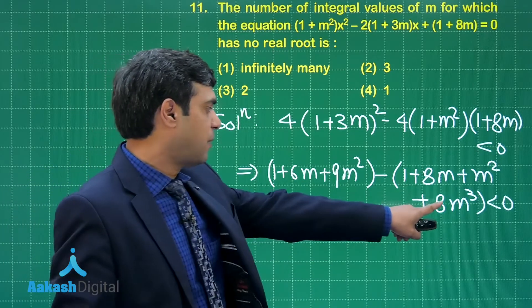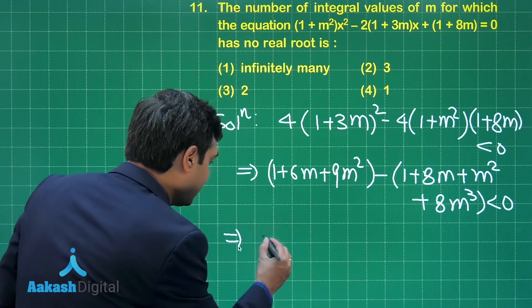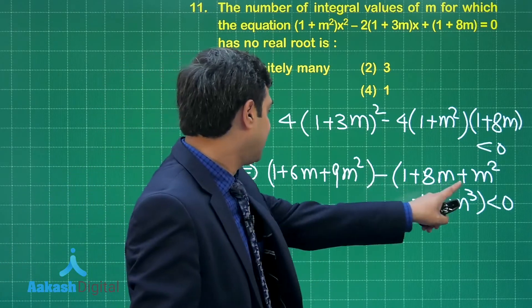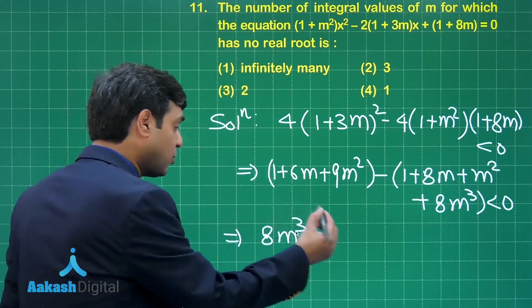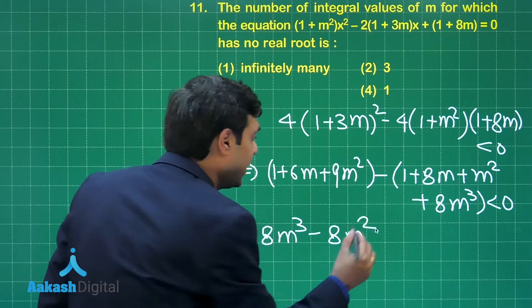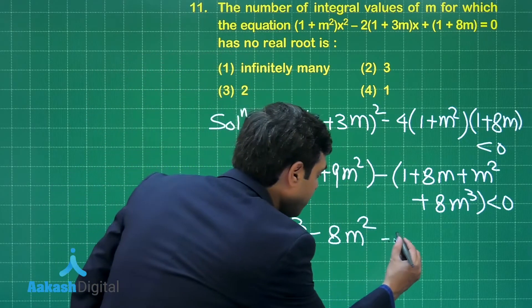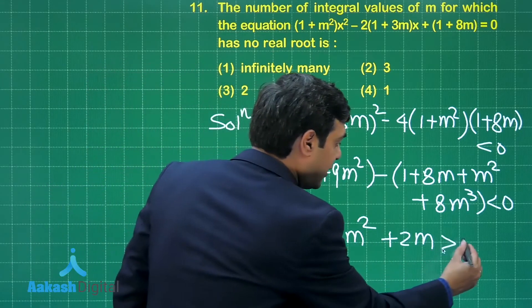Simplifying further, highest power is 8m³ with negative sign. Throw negative on the other side. Write it as 8m³, next -m² + 9m² that is +8m² but minus already taken common, so -8m² next. 6m - 8m, so it becomes +2m, then 1 cancelled, greater than 0.